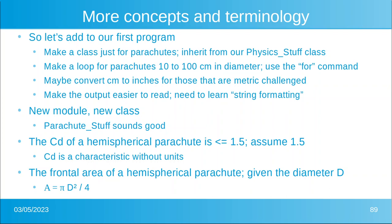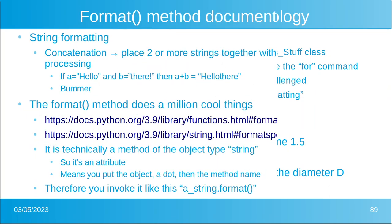For those of you that are worried about units, coefficient of drag is a characteristic that does not have units. It's actually a ratio. Now the frontal area of a hemisphere, if I give you a diameter, is pi D squared divided by 4. That's very similar to pi r squared. Nothing should be a surprise there.